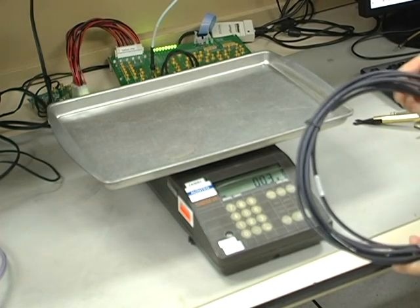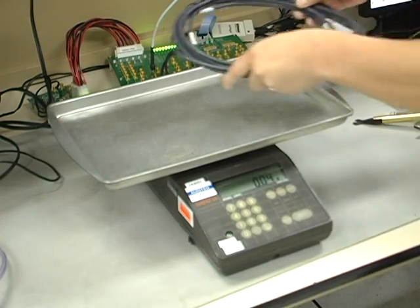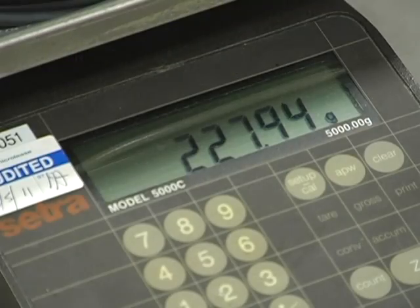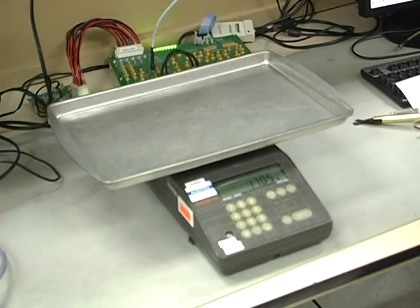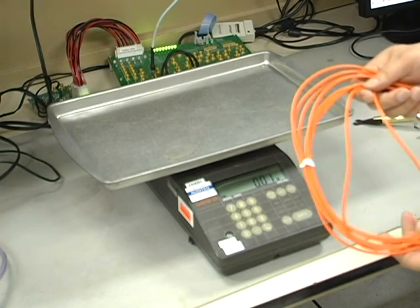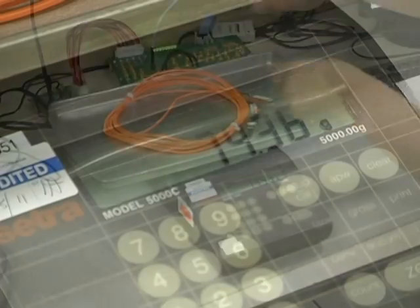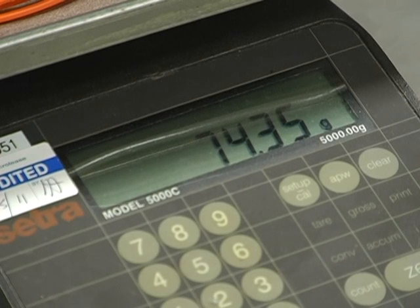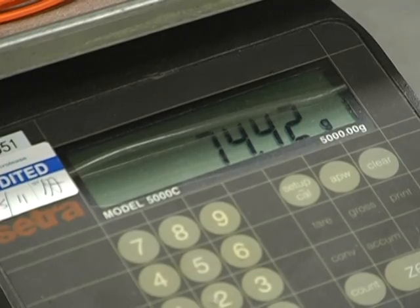So what we have here is 5 meters of the passive copper cable. It's measuring in at 230 grams. This is a 5 meter active optical cable, so essentially the same length equivalent. And it's measuring in at 75 grams. So you can see in terms of the same 5 meter distance, the active optical cable is much lighter.